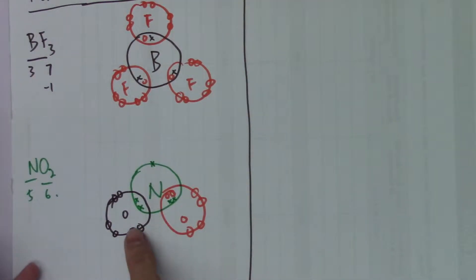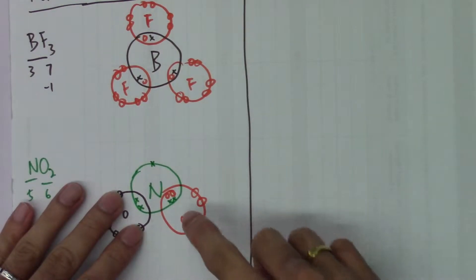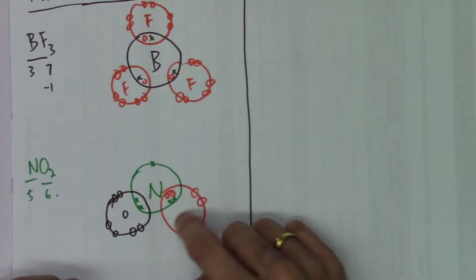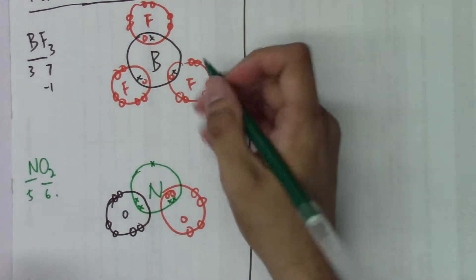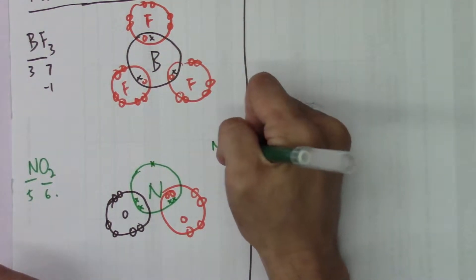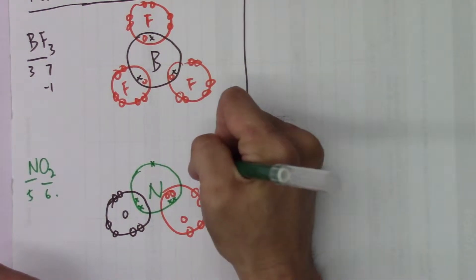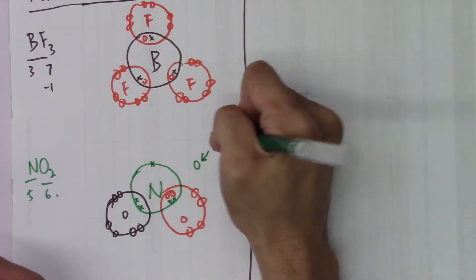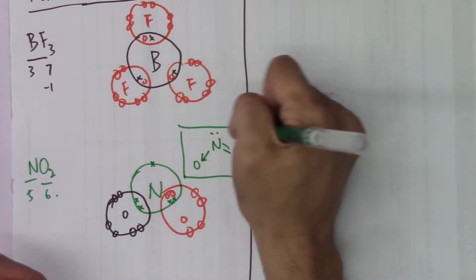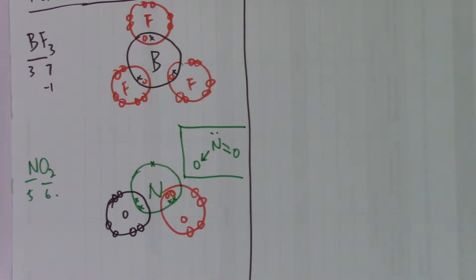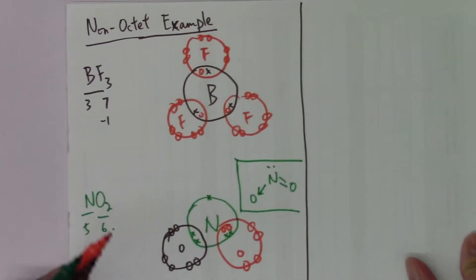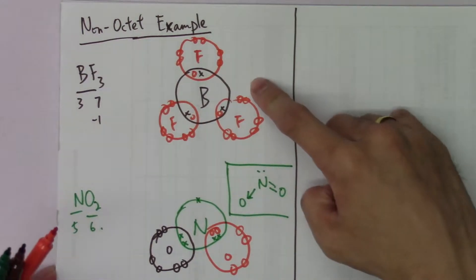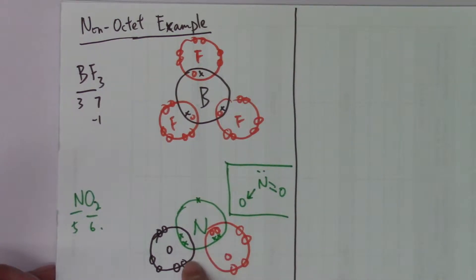When you count the total number of electrons, this NO2 compound has totally seven electrons on the central nitrogen atom, so it's not an octet either. It's a less-than-octet case — BF3 has only six electrons and NO2 has seven electrons on the central atom.